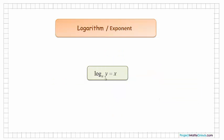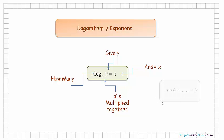In general, writing the log of any natural number y to the base a equals x is the same as asking the question: how many a's, multiplied together, will give the number y? And the answer is x. So, a by itself x times gives y, or a to the power of x is equal to y.